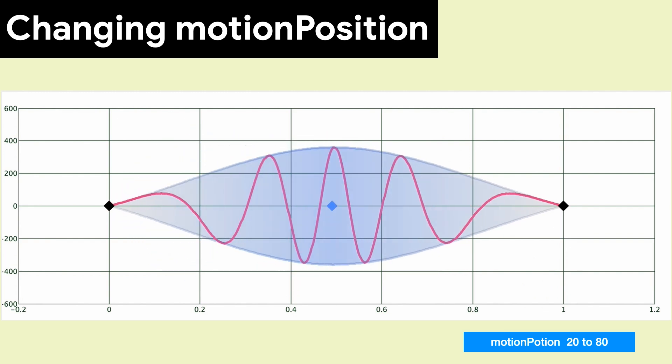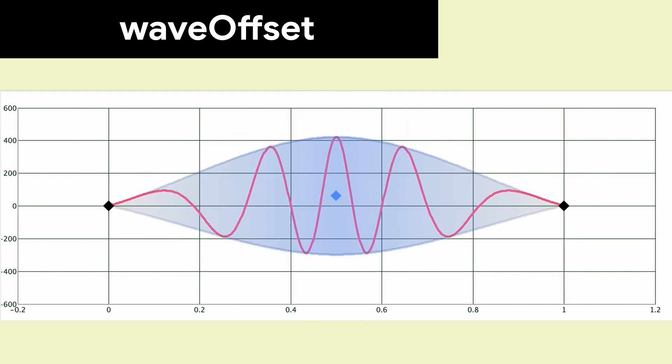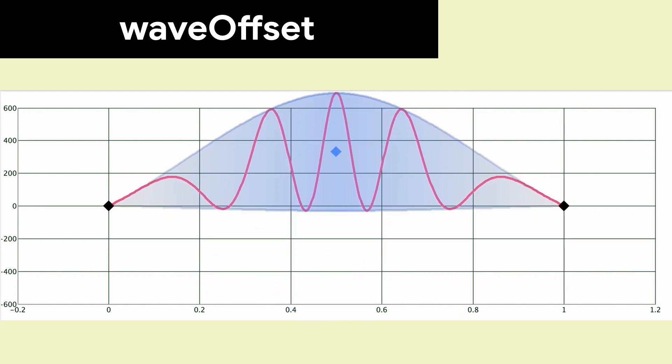The position of the keyframe sets the center of the oscillations, and the waveOffset shows you how to adjust the wave upward or downward.